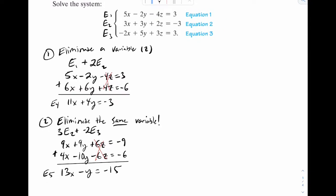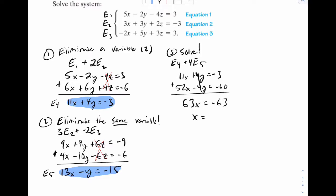And now that we have that, step three is we can finally solve. Because look at this, we have two equations with two variables. And that's pretty easy to solve. So looking at that, I can see the y's look good to work with. So I'm going to leave E4 alone. And I'm going to multiply E5 by 4. So I'll rewrite equation 4. Let's multiply equation 5 by 4. That would be 52x minus 4y equals negative 60. Now let's add. And look at that. 63x equals negative 63. So x must be negative 1.